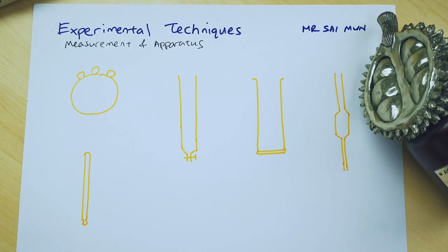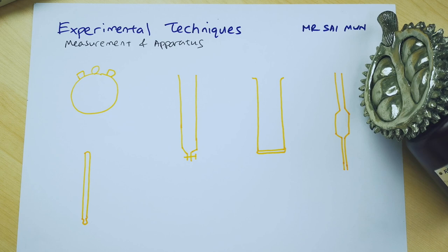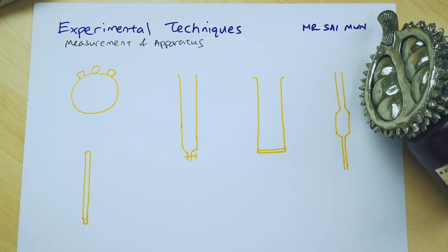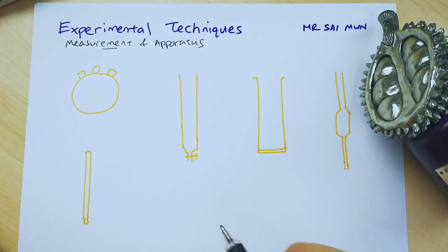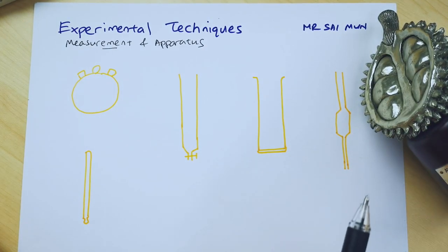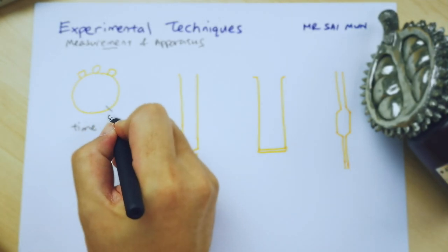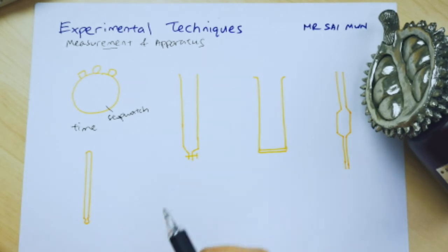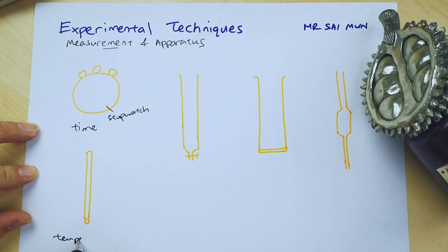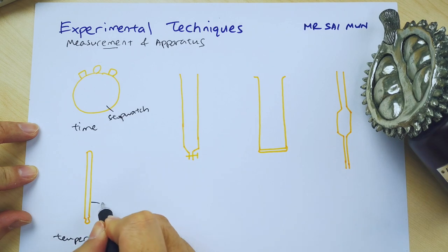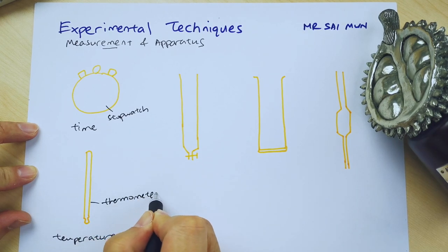Let's move on to the next chapter: experimental techniques — measurement and apparatus. This is in your syllabus so you need to know all these apparatus. In your Paper 6, or sometimes Paper 4 or Paper 2, or multiple choice, they will ask you how to measure things. To measure time, you use a stopwatch. To measure temperature, you use a thermometer — specifically a mercury thermometer.